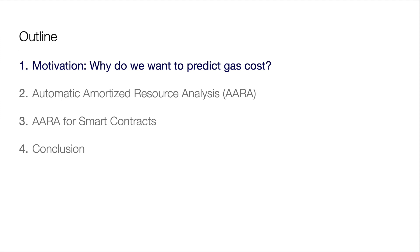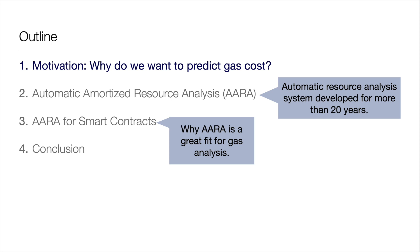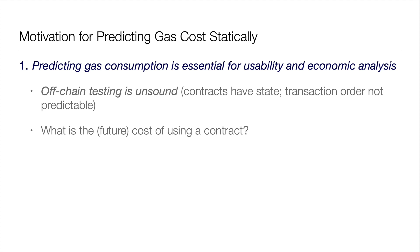Then I give a brief overview of automatic amortized resource analysis, developed over the last 20 years to automatically reason about the resource cost of programs — not in the context of smart contracts. Then I talk about why this is a great fit for smart contracts. And then I'll conclude.